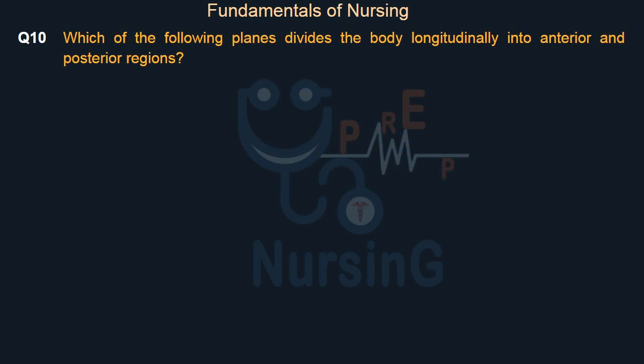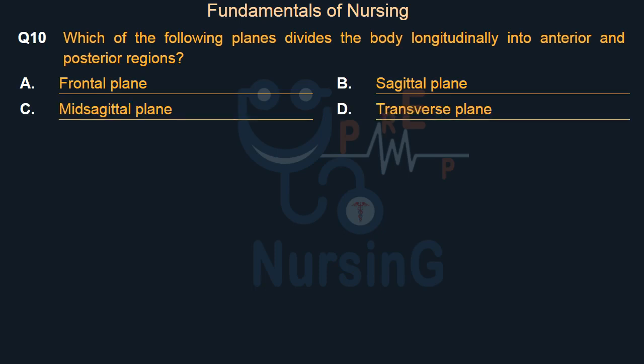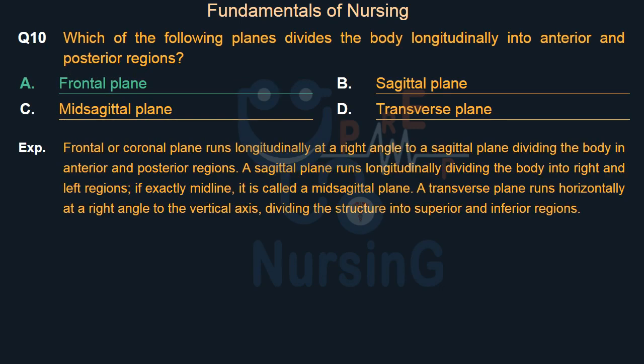Which of the following planes divides the body longitudinally into anterior and posterior regions? Option A: Frontal plane. Option B: Sagittal plane. Option C: Mid-sagittal plane. Option D: Transverse plane. The right answer is Option A: the frontal or coronal plane, which runs longitudinally at a right angle to a sagittal plane, dividing the body into anterior and posterior regions. A sagittal plane divides the body into right and left regions. A transverse plane runs horizontally, dividing the structure into superior and inferior regions.